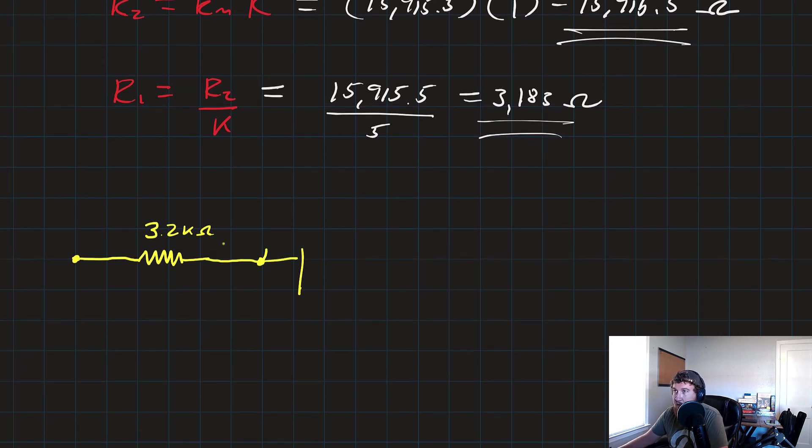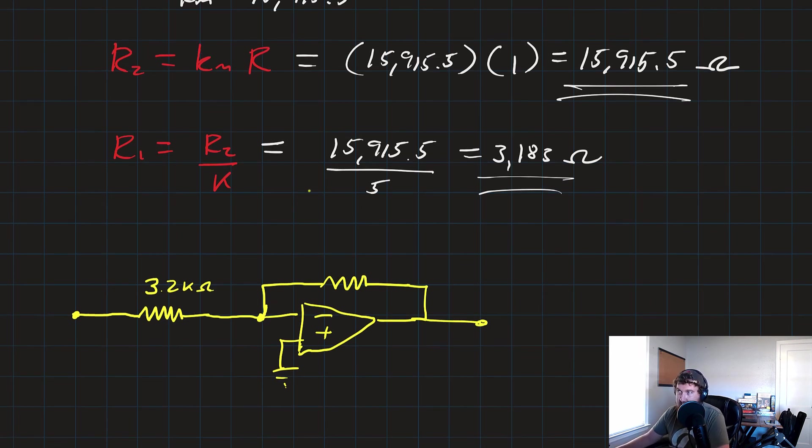It feeds to the op-amp. Minus plus. Plus goes to ground. R2, again, 15,915.5 ohms. It's not so great, so you'd probably end up using something just like 16 kOhms. And then we have a capacitor that we picked to be 10 nanofarads.